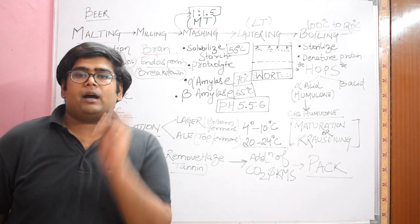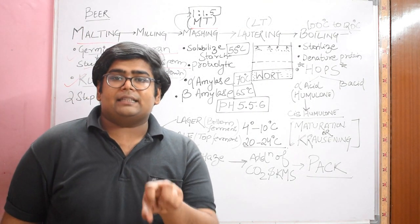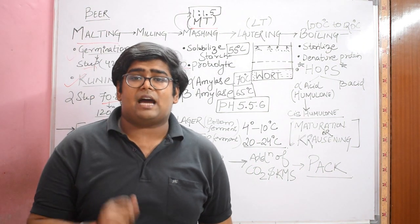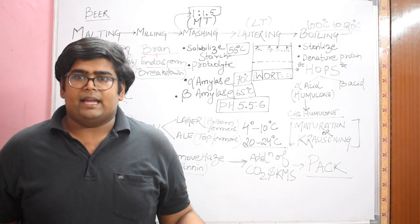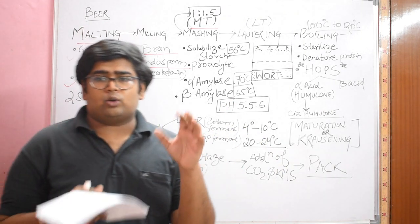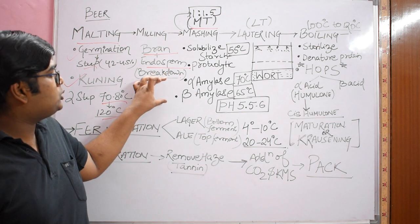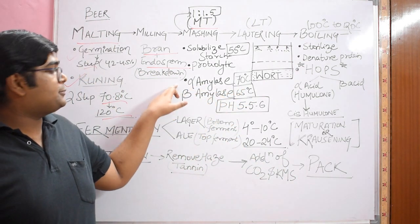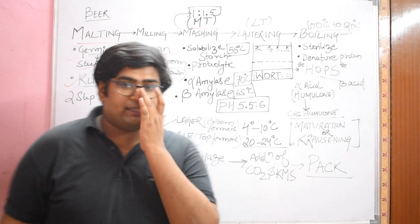We break it using proteolytic or protease enzymes. At 40 to 45 degree centigrade, our protease enzymes work. Then we increase the temperature to 55 to 60 degree centigrade where our starch solubilizes or gelatinizes. This means starch is soaking up water. Then alpha amylase and beta amylase work. Starch is made of two components: amylose and amylopectin. Amylose is a single chain of glucose and amylopectin is a branched chain. We need to break the branched chain into simple fermentable sugars, which is done by alpha amylase and beta amylase. This process is also known as saccharification and happens at 70 degree centigrade and at a pH of 5.5 to 6.